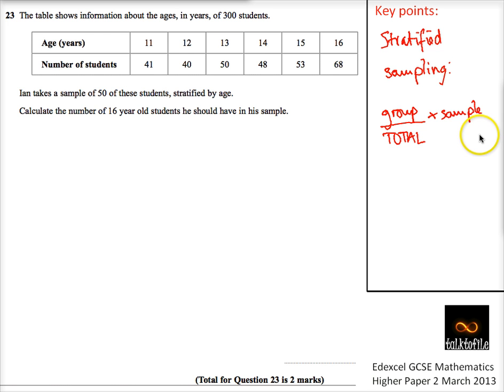We know that the total is 300, so the group divided by the total - this is the fraction that you want of the sample. So fraction times sample.